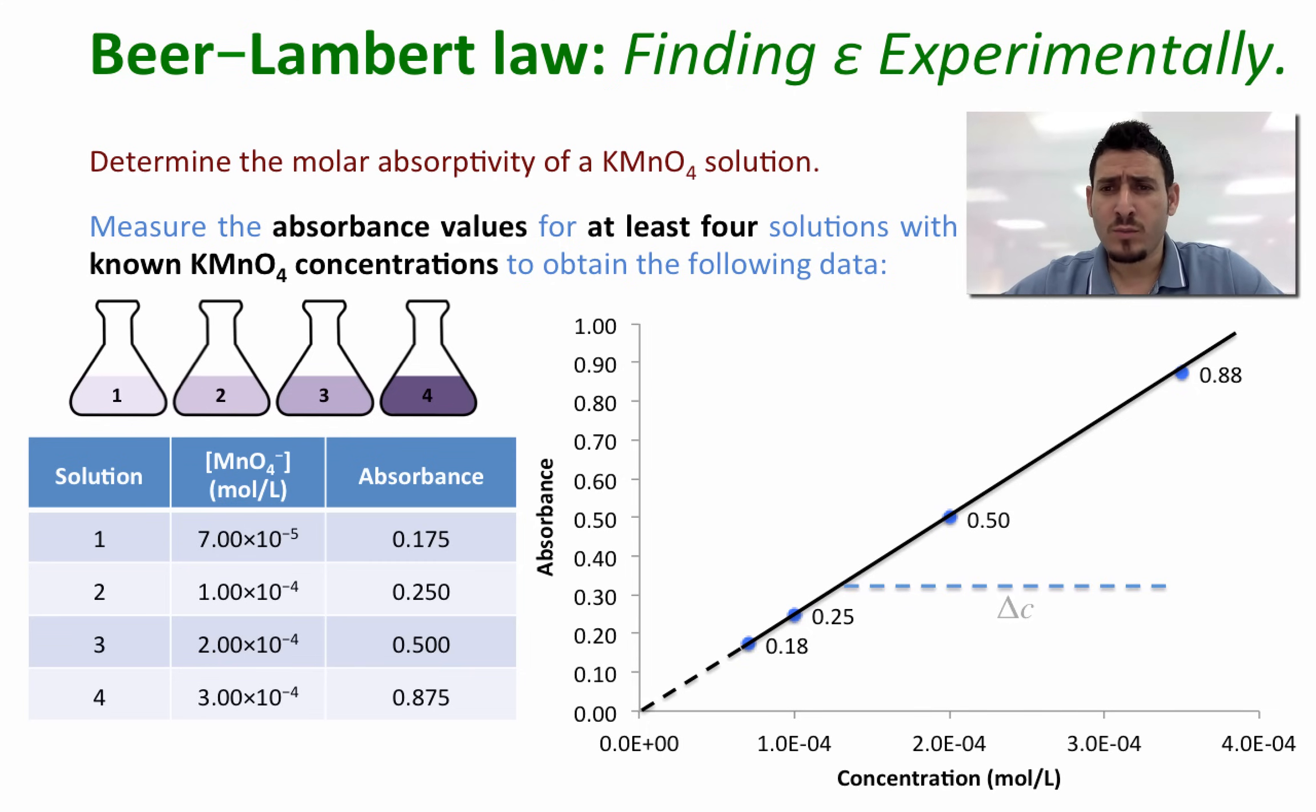Take the best fitting line of these points that passes through zero. Find the slope of this line by saying slope equals delta A divided by delta c. This slope is equal to epsilon multiplied by l, where l is the distance traveled by light through the sample and it's usually the width of the cuvette, which comes around one centimeter. So we know l, we know the slope, we can find the molar absorptivity.